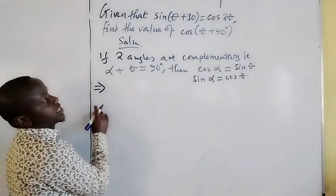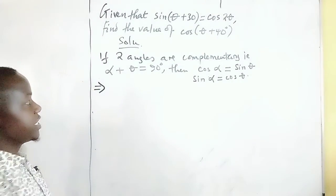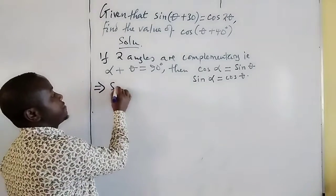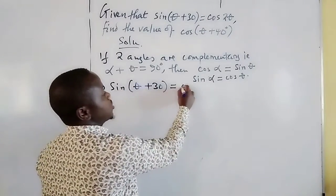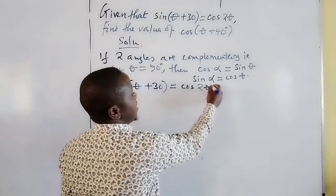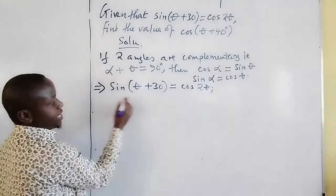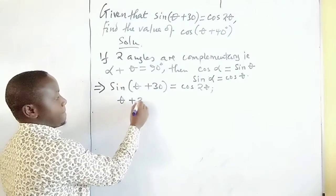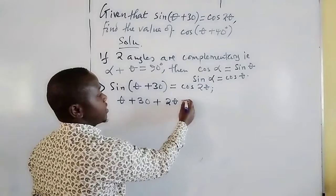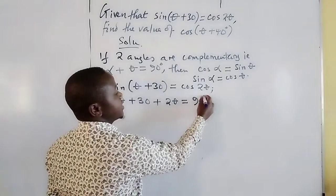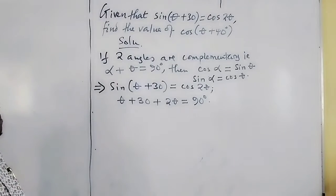The two angles added should give us 90°. So if sin(θ + 30°) = cos(2θ), this implies that when we take (θ + 30°) and add 2θ, we should get 90°. The two angles are complementary as long as sine of one equals cosine of the other.